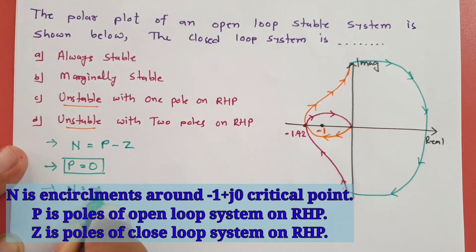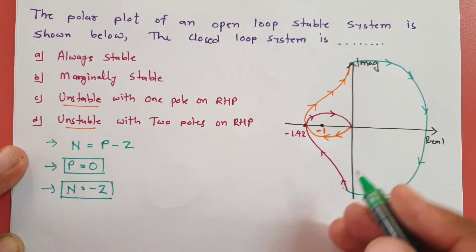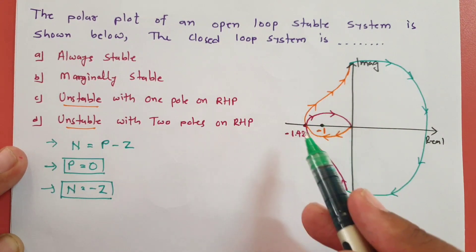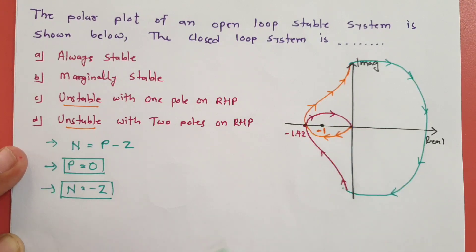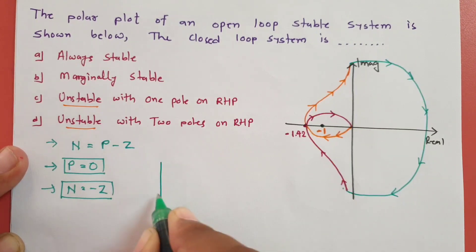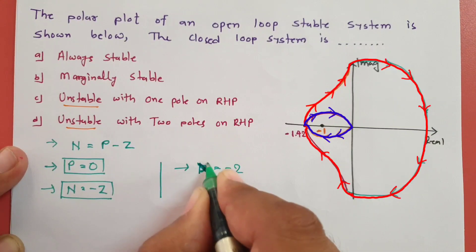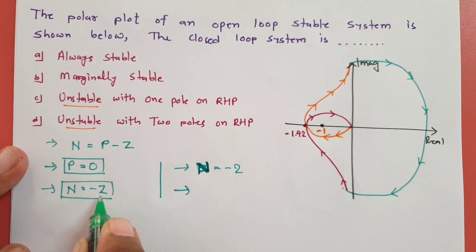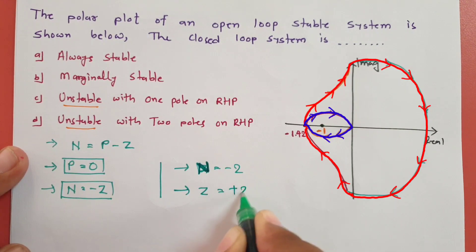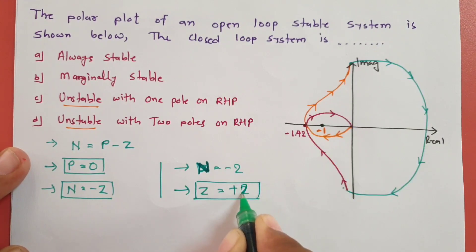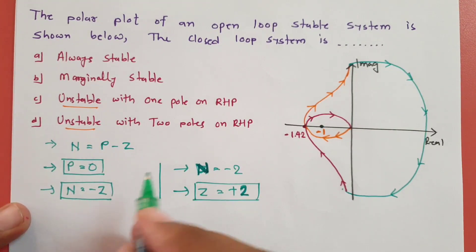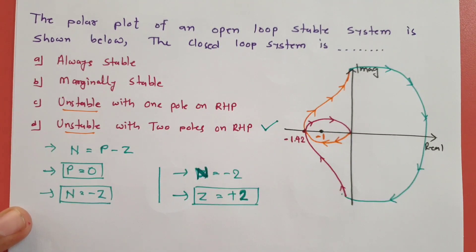There are two encirclements around −1+j0, occurring in the clockwise direction. Since clockwise encirclements are negative, N = −2. With N = −Z, we get Z = +2. Therefore the closed loop system has two poles on the RHP, making it unstable with two RHP poles — that is the correct answer for this question.